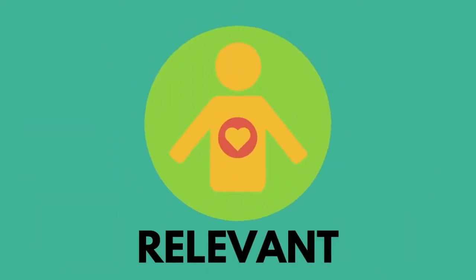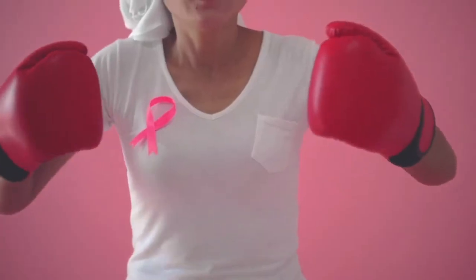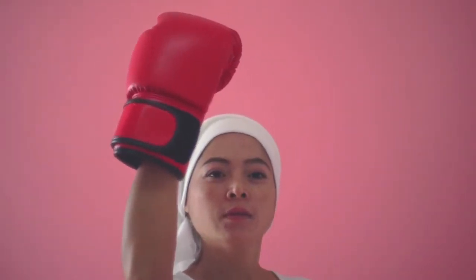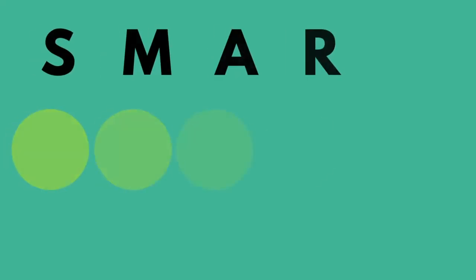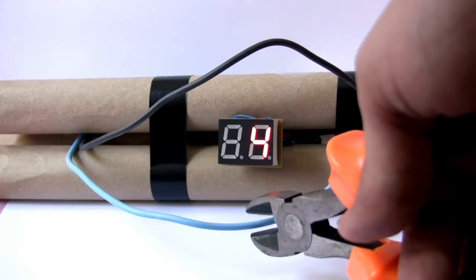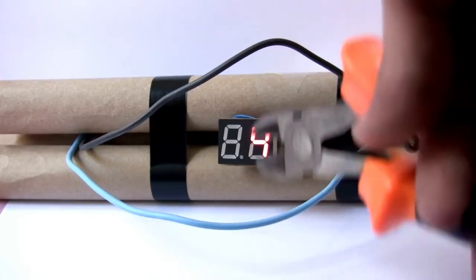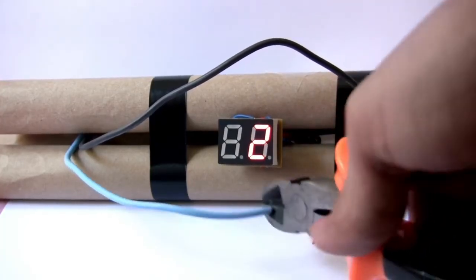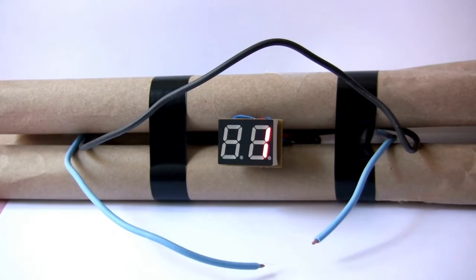Relevant — make sure that by attaining the external goal, the protagonist's internal need is met. Time-bound — make sure there is a sense of urgency. Without it, we don't need to witness this moment in the protagonist's life.